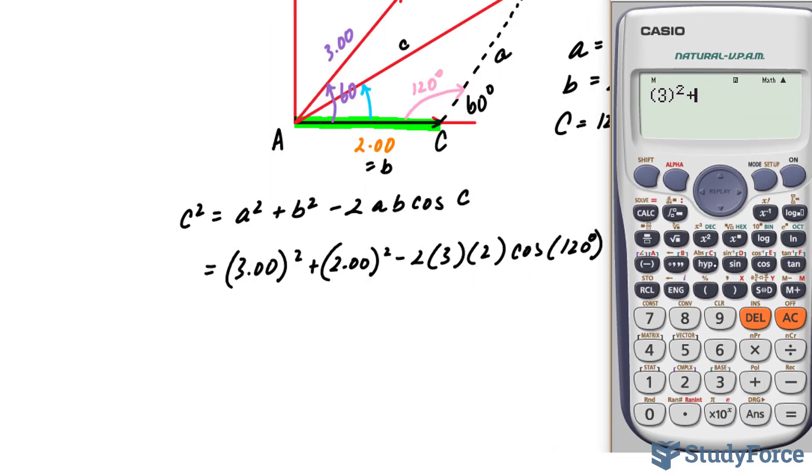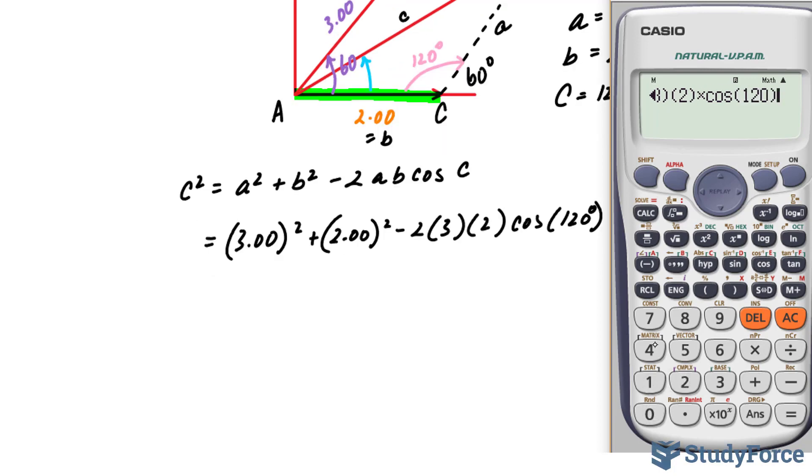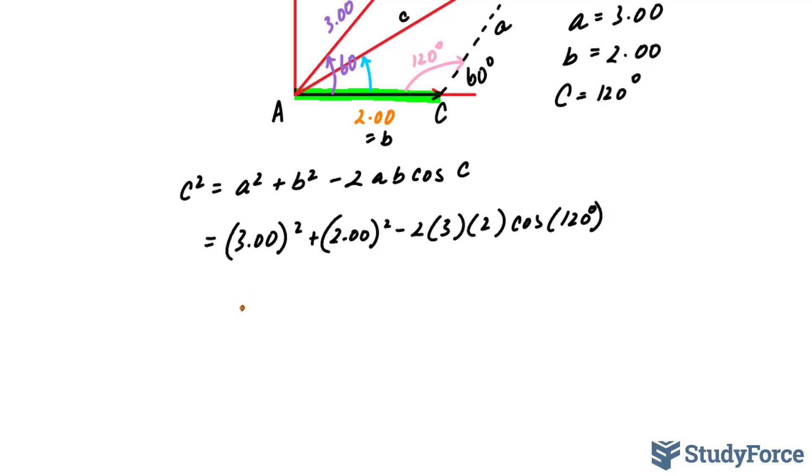Using my calculator, 3 to the power of 2. Notice that I'm not adding the decimal zeros; there's no need for that. 3 times 2 times cosine 120. Before you press equals, make sure your calculator's not in radians but in degrees. My calculator's now in degrees and I end up with 19. I'll square root this number, because that's the last step, and I end up with 4.358. That is equal to my C.